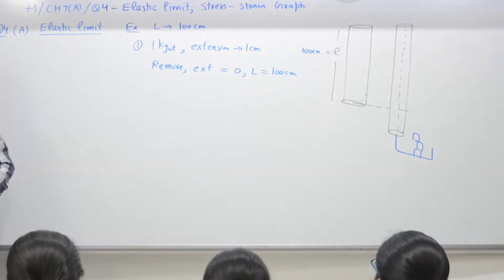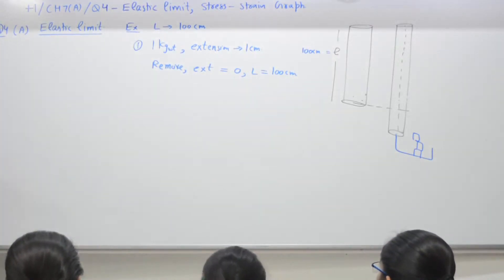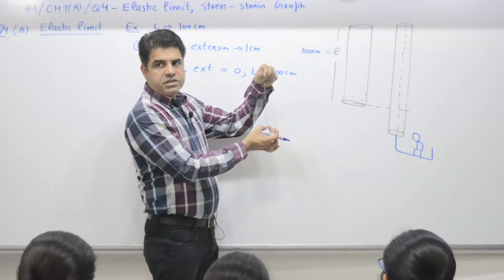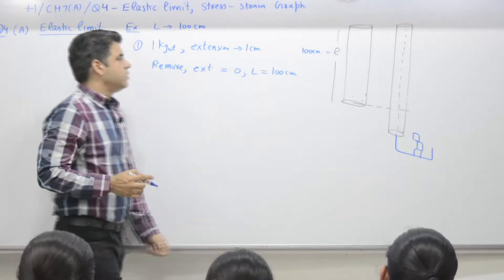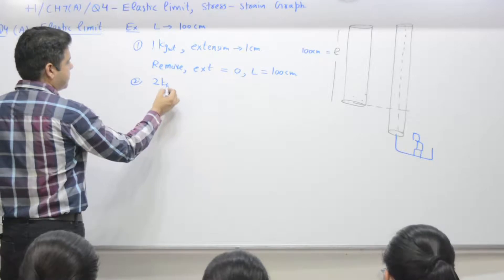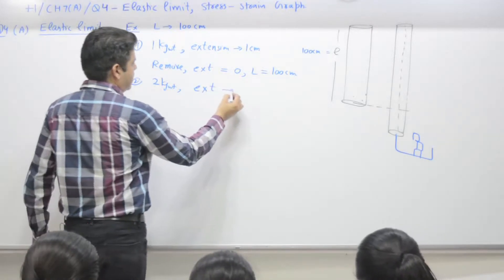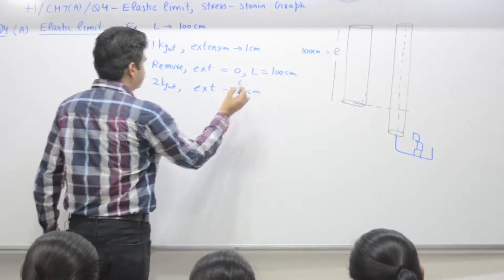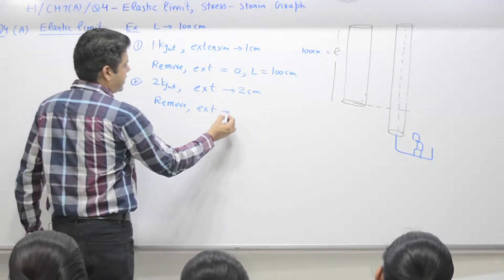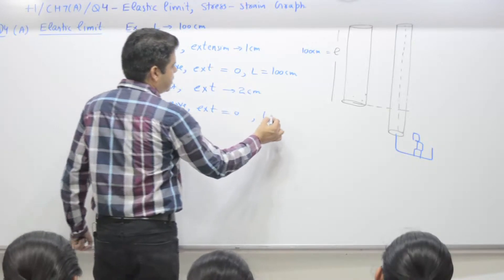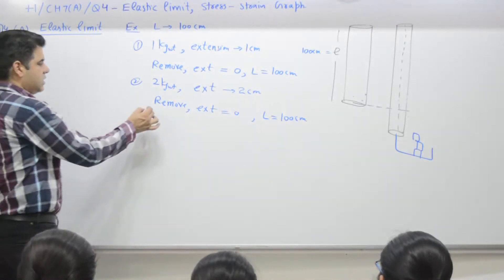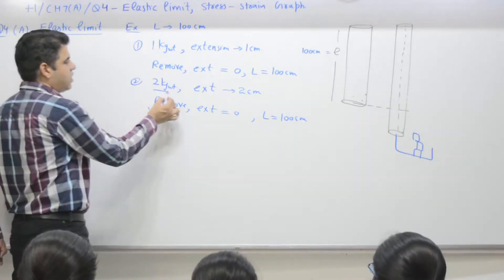This means spring behavior: original length is given, you apply weight, length increases, you remove weight, it comes back to original. 2 kilogram weight, extension 2 centimeter, remove the weight, extension reduces back to 0 and length is again 100 centimeter. You keep on doing this up to 5 kilogram weight — it is workable.